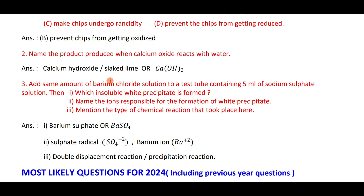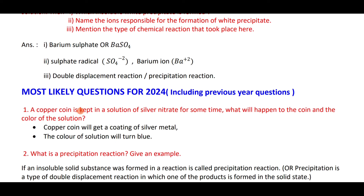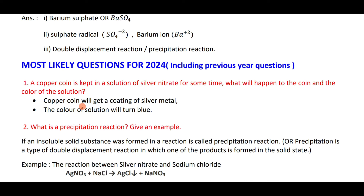When barium chloride solution is added to sodium sulfate, an insoluble white precipitate is formed — this is an example for double displacement or precipitate reaction. The white precipitate formed is barium sulfate BaSO₄. The ions involved are SO₄²⁻ and Ba²⁺.